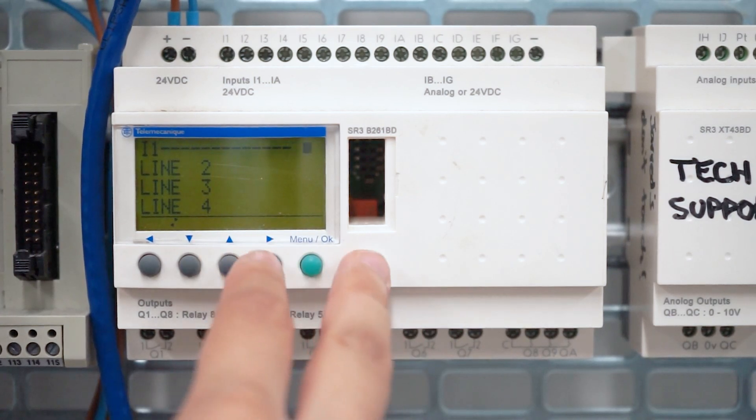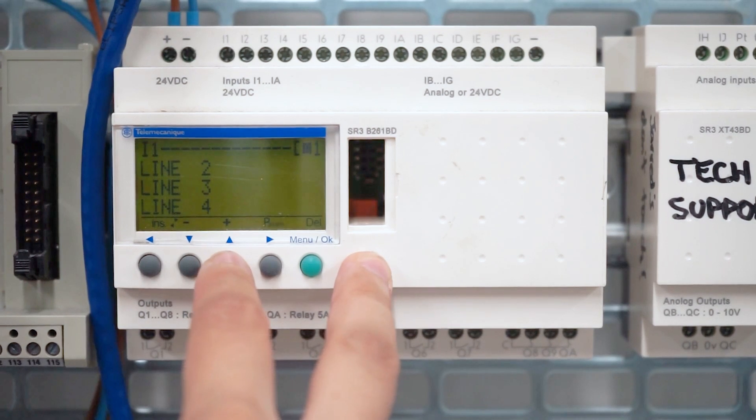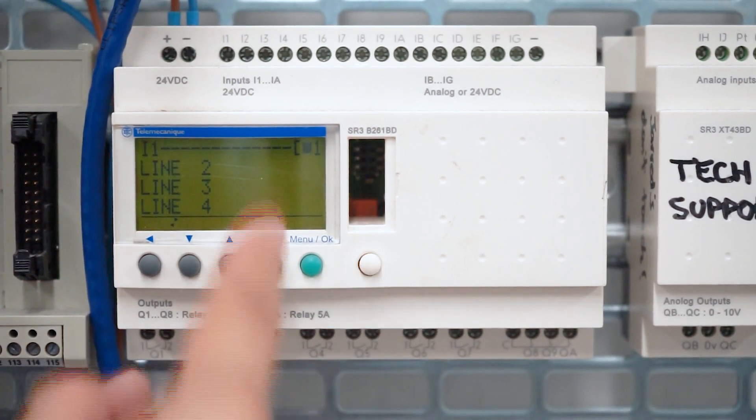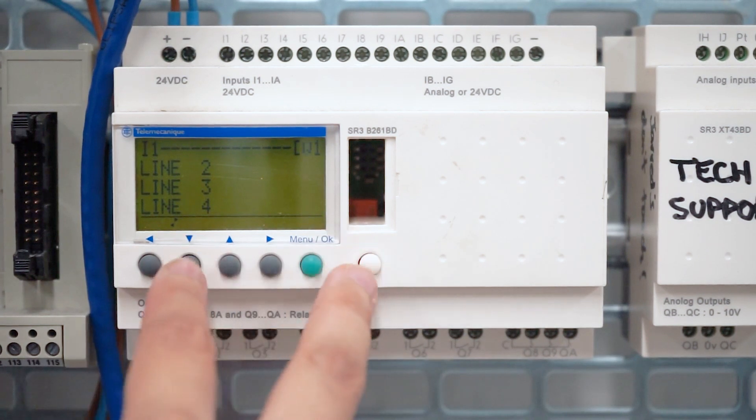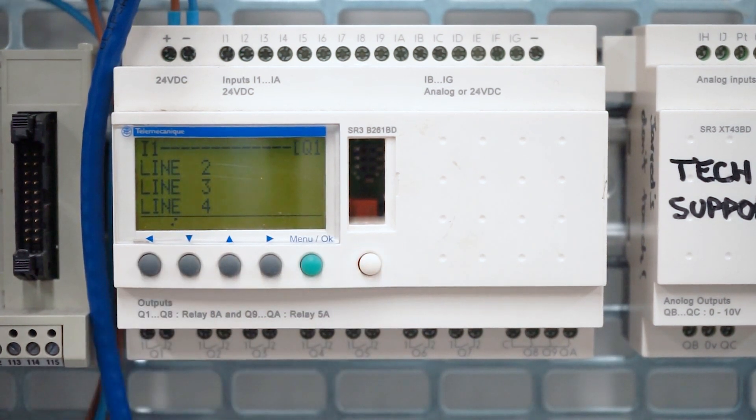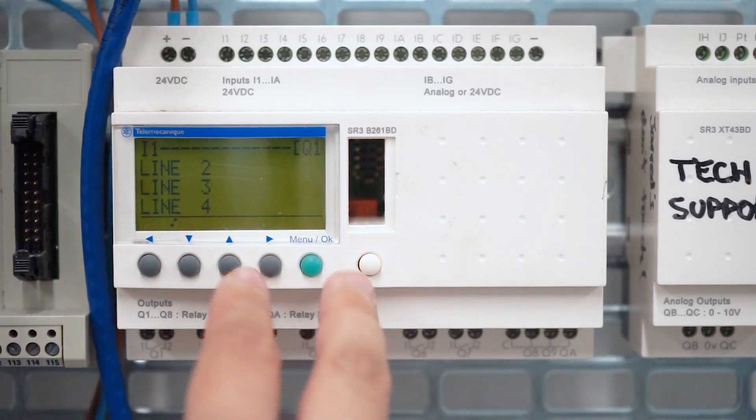And if you want to insert a coil, you press the shift key and the up button. So m1, n1, q1, and let's say we want q1, so we'll leave it at that. You can also change the trigger for the coil here, so you can press shift up or down.